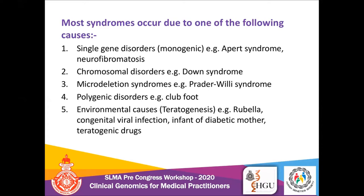Examples of monogenic disorders include Apert syndrome or neurofibromatosis. There can also be chromosomal disorders such as Down syndrome, Turner syndrome, and Edwards syndrome. You can have microdeletion syndromes such as Prader-Willi syndrome, as well as polygenic disorders where more than one gene affects the outcome, such as club foot. There can also be non-genetic environmental causes called teratogens, such as rubella, congenital viral infections, maternal diabetes, and teratogenic drugs.